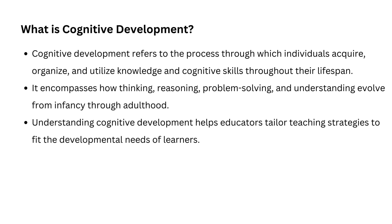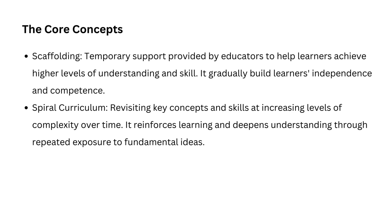For example, a teacher who understands that a young child is in the early stage of cognitive development may use more hands-on activities and visual aids rather than abstract reasoning, which is more suitable for older children. As we discuss Bruner's theory, we will see how these stages of cognitive growth inform our teaching methods and curriculum design. Now let us understand the core concepts of this theory: scaffolding and spiral curriculum.